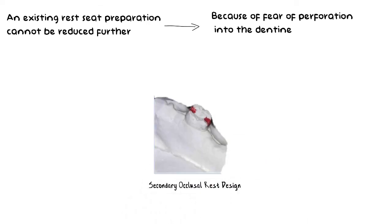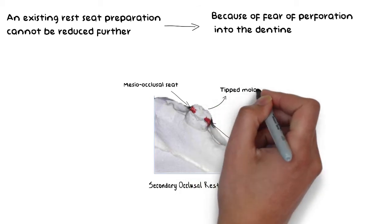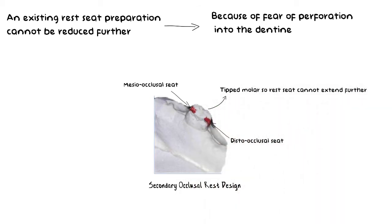Just like in this example, two occlusal rest seats, one mesoocclusal and the other distoocclusal are used. This will prevent unfavorable forces onto the abutment contributing to the longevity of the tooth.